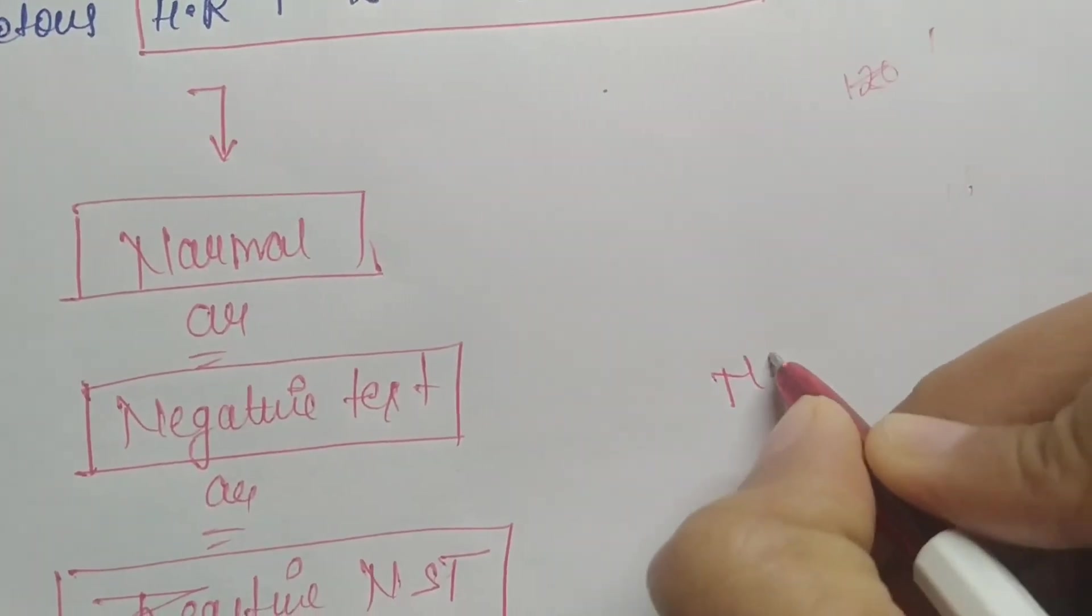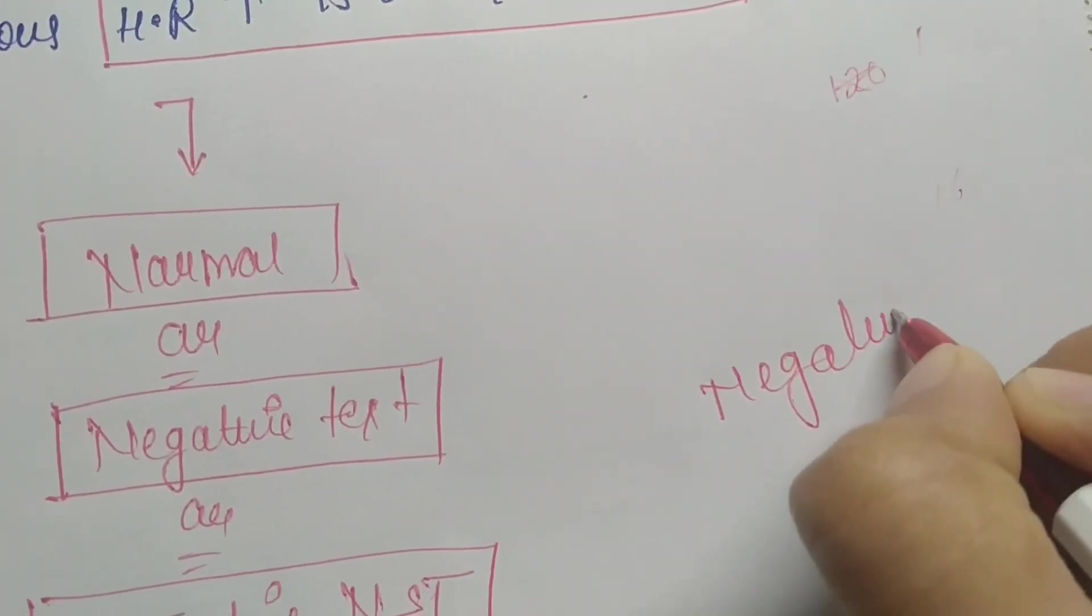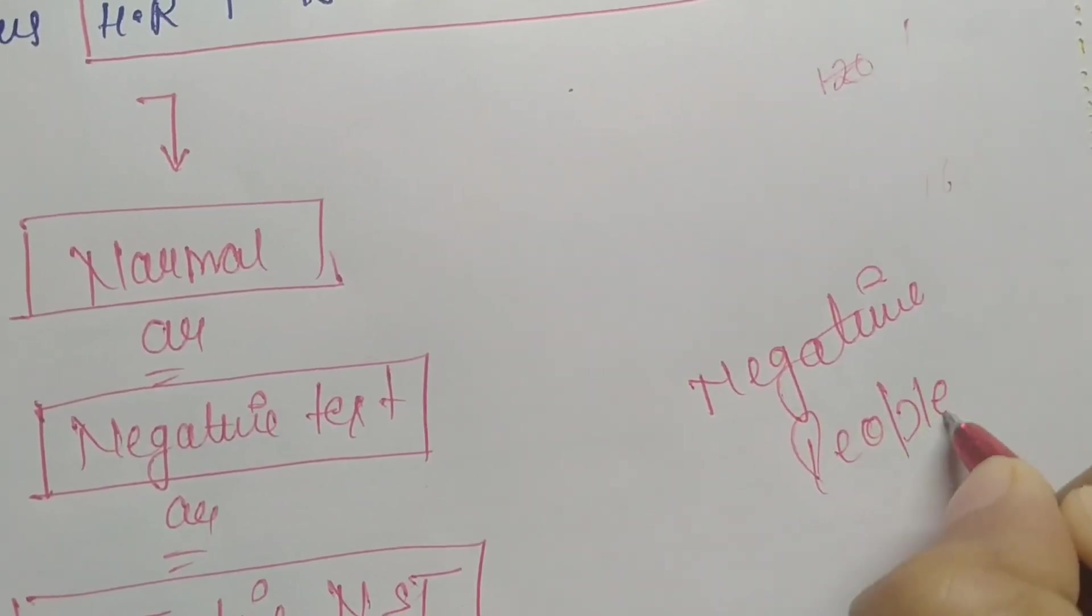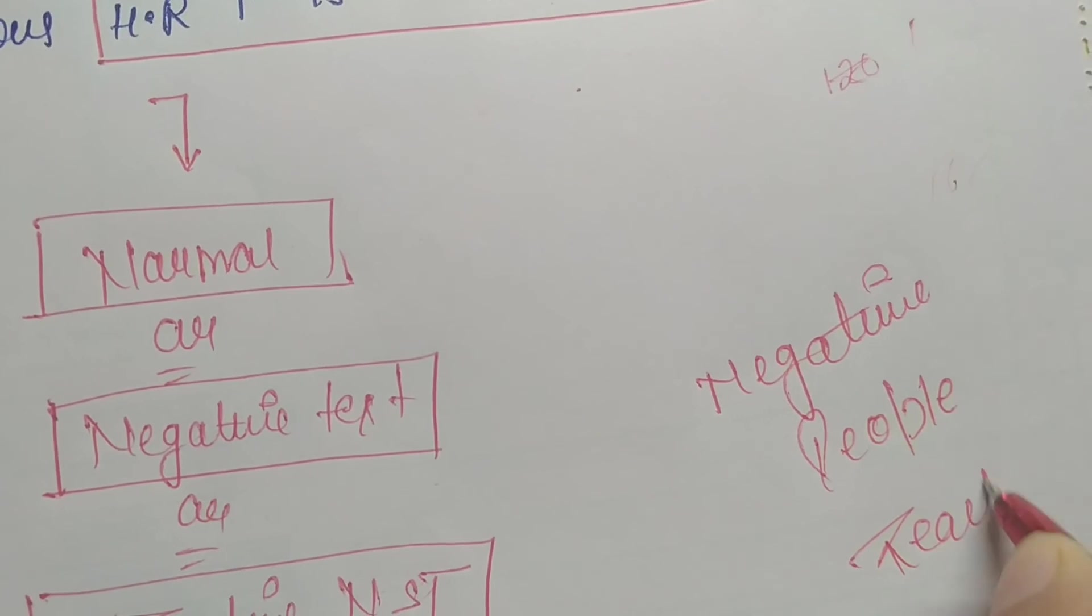The thing we are assessing is reactive NST. You can learn by this: negative people react. This is to help you remember. Negative people react, so with negative, what is always there is reactive.